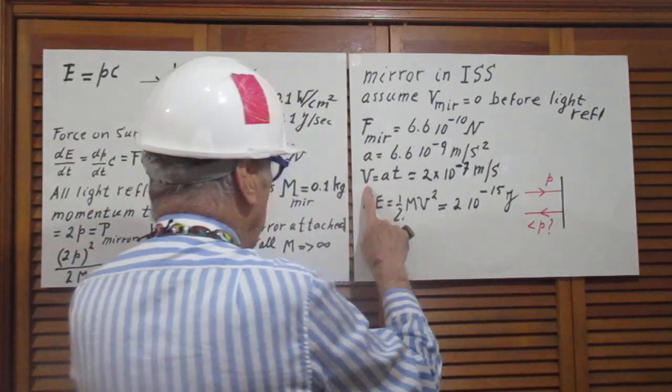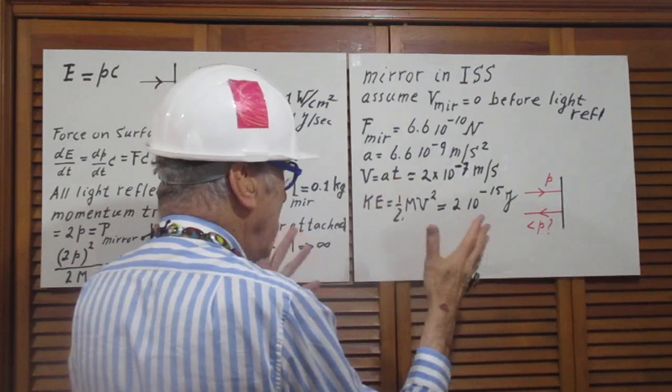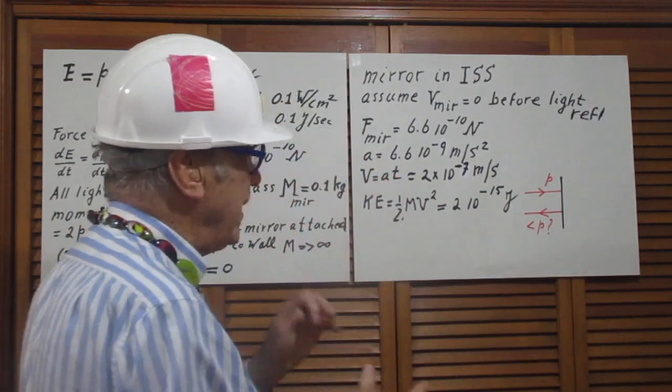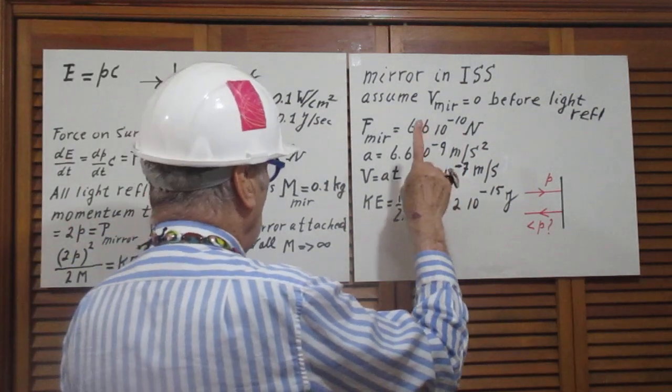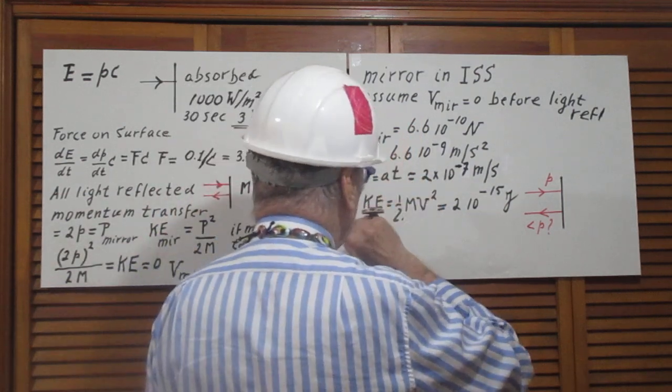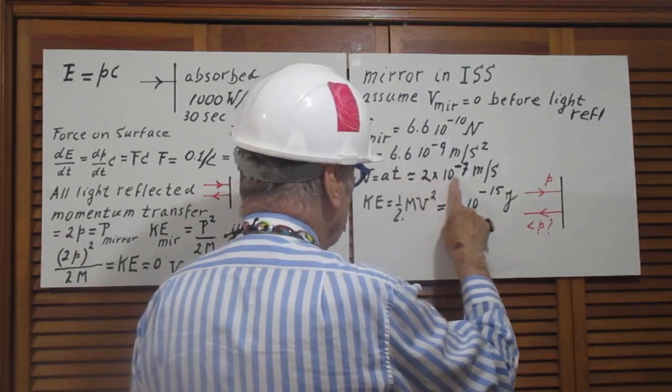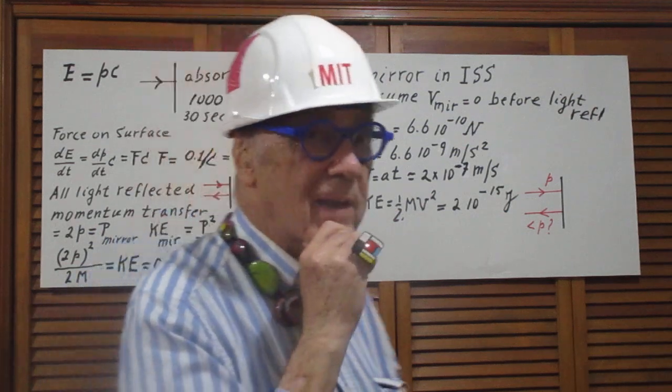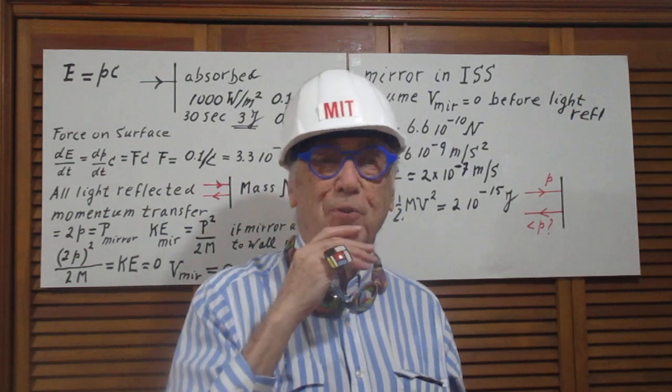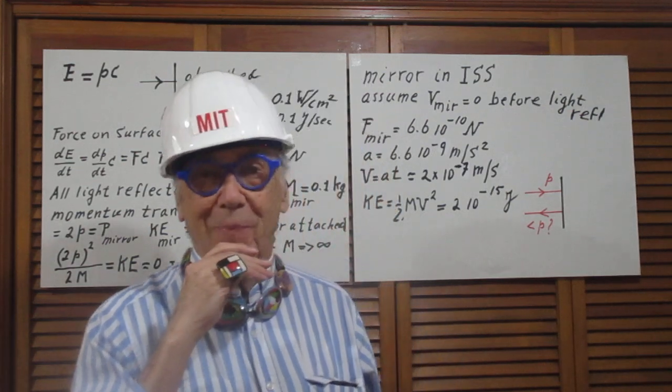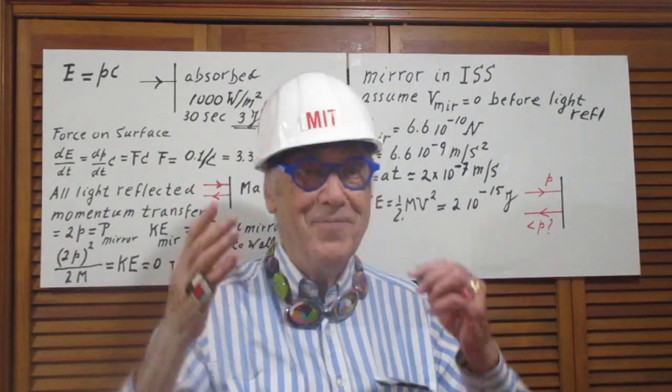The velocity of the mirror is the acceleration of the mirror times the time that the acceleration works, which is 30 seconds. So the velocity is then this value times 30, which is very close to 2 times 10 to the minus 7 meters per second. Think about it. 0.2 microns per second. The wavelength of light is roughly half a micron. It is even less than that.